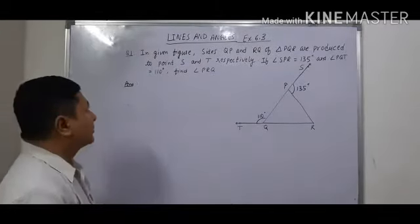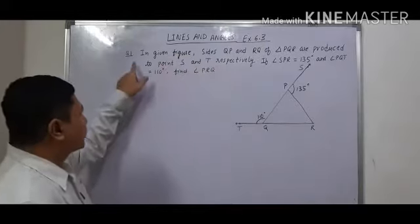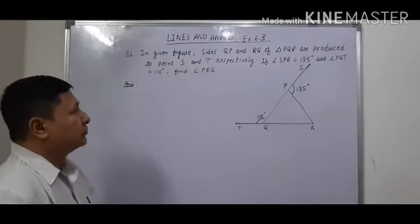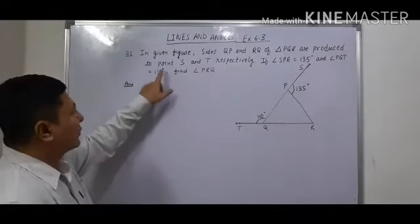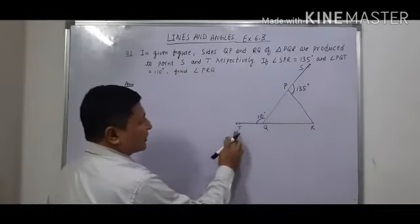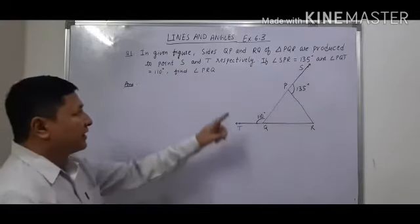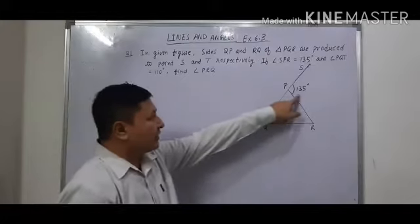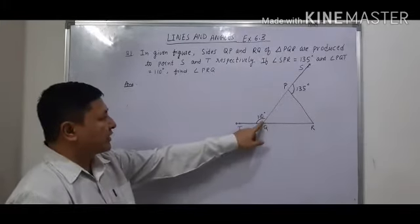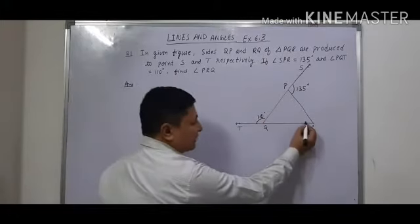Now let us start exercise number 6.3, question number 1. In the given figure, sides QP and RQ of a triangle PQR are produced to points S and T respectively. The side RQ is produced to T and QP is produced to S. If angle SPR is equal to 135 degrees and angle PQT is equal to 110 degrees, we have to find angle PRQ.